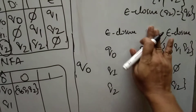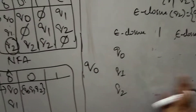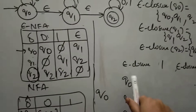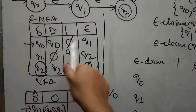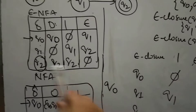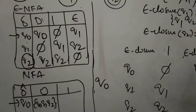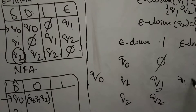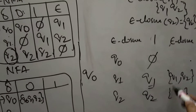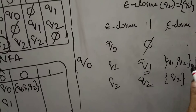Similarly, calculate Q0 upon 1. Epsilon closure of Q0 is {Q0, Q1, Q2} — no change. Q0 upon 1 has no transition (phi), Q1 upon 1 goes to Q1, Q2 upon 1 goes to Q2. Epsilon closure of Q1 is {Q1, Q2}, epsilon closure of Q2 is Q2. Applying union, Q0 upon 1 gives {Q1, Q2}.